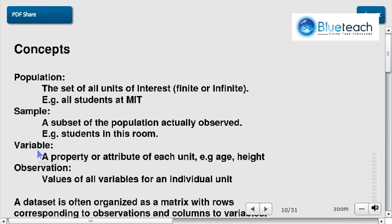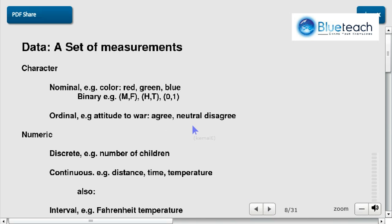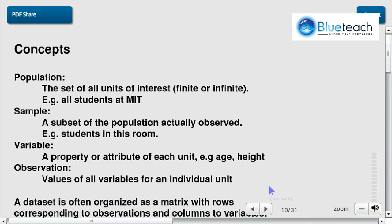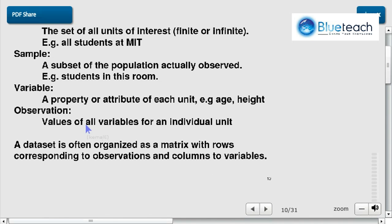A variable is the property or attribute of each unit. Age or height, for example. So this is going back to the data here. So for every unit of the sample, we're going to observe a variable that's either a character or numeric.